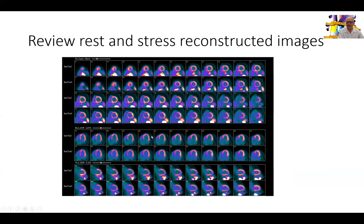Then we move to the standard review of rest and stress images — reconstructed rest images on the bottom and stress images on the top. You can see GI activity, not an unusual finding in patients undergoing rubidium pharmacological stress testing. We have a very minor defect towards the LV apex in the rest images. There is a dilated left ventricle and a minimal defect in the septum that goes away with stress — nothing to report as far as fixed or reversible defect, meaning no ischemia and no evidence of scarred myocardium.